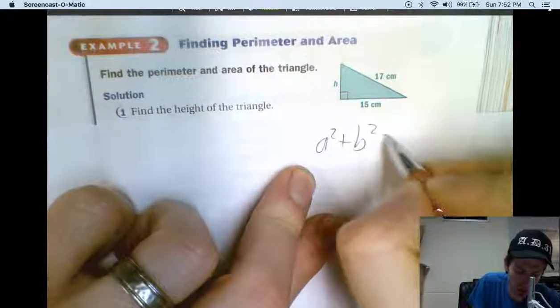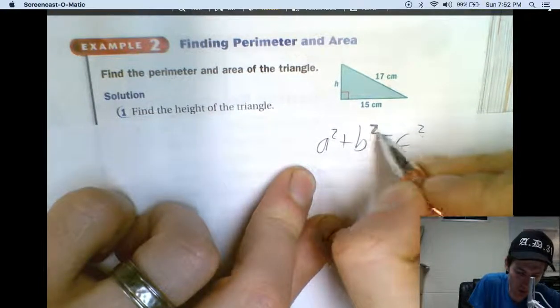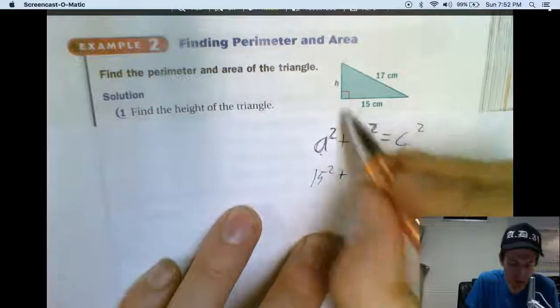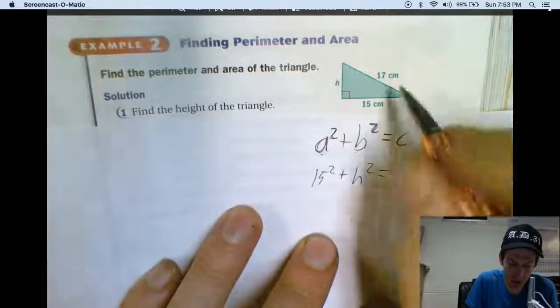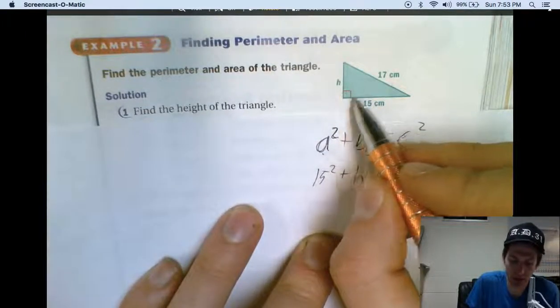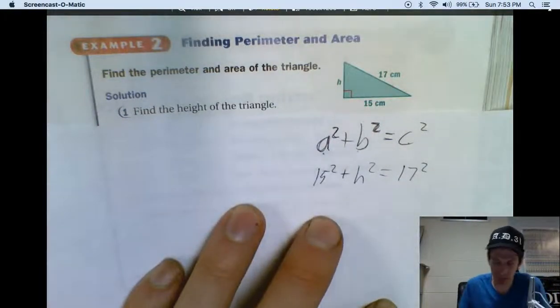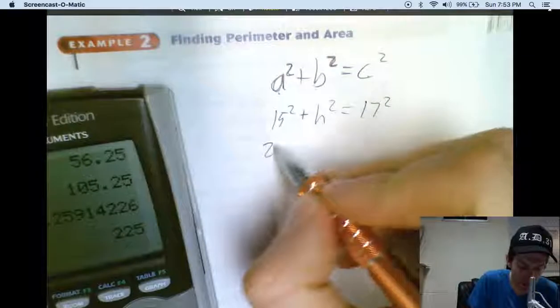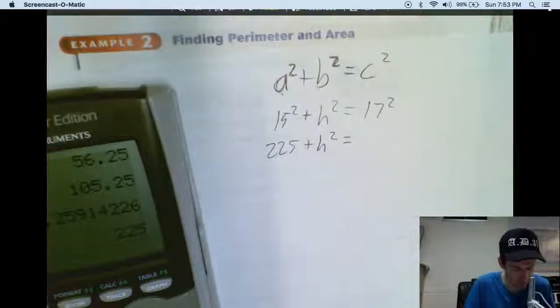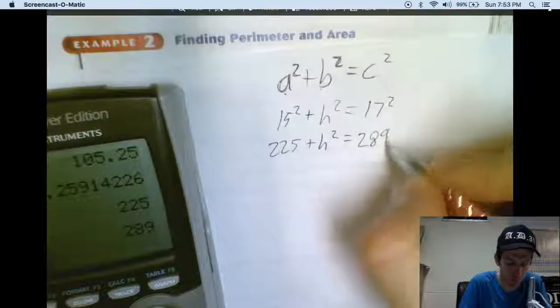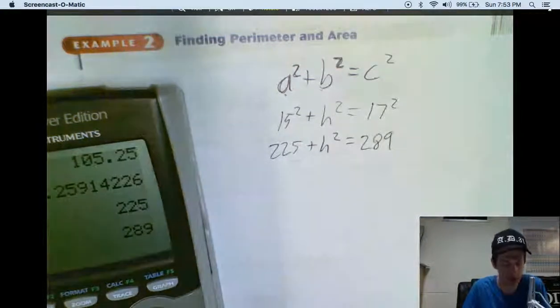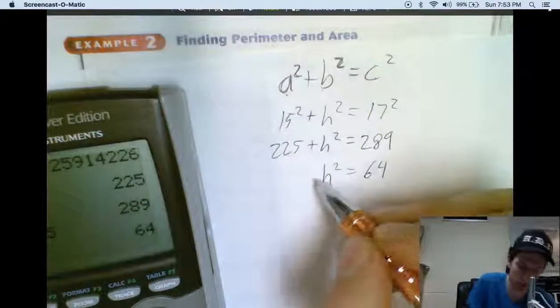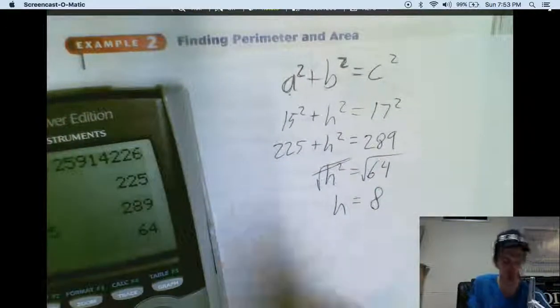A squared plus b squared equals c squared. Say that to yourself in your head right now. You should know this formula, Pythagorean theorem. These are the legs. That's the hypotenuse. 15 squared plus h is the other leg. We don't know what it is, but we've got to stick it in there anyway. 17 is the hypotenuse. It's always opposite the right angle. So 17 squared. Well, 15 squared, I'm going to do on my calculator right here. 15 squared is 225. 15 squared plus h squared equals, and then 17 squared is 289. Now I'm going to subtract 225 from both sides. So minus 225. h squared then is 64. How do I get rid of that square? Do the square root. Got to do it to both sides. What's the square root of 64? You know that in your head. It's 8.